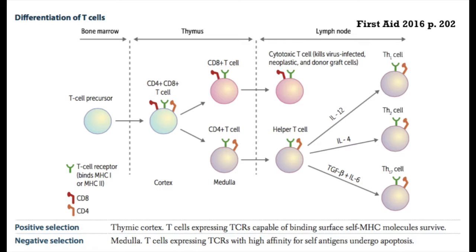While in the thymus, T cell maturation begins in the outer cortex, where they differentiate to express CD3 and both CD4 and CD8 — at this point they're known as double positive thymocytes. These immature T cells then acquire specific T cell receptors and commit to single antigen specificity. Like B cells, they make receptors that allow them to focus on a single specific antigen.